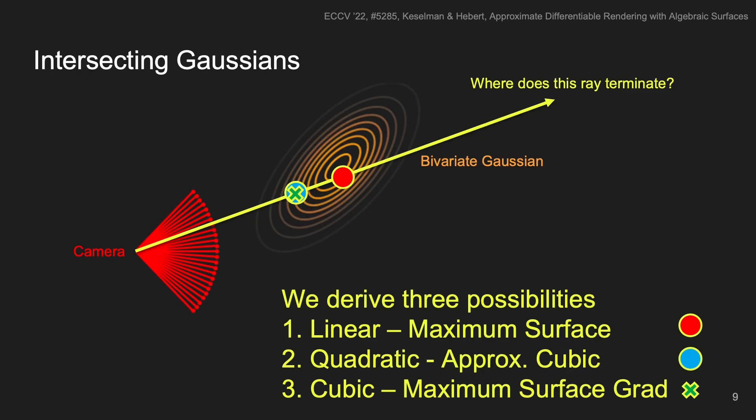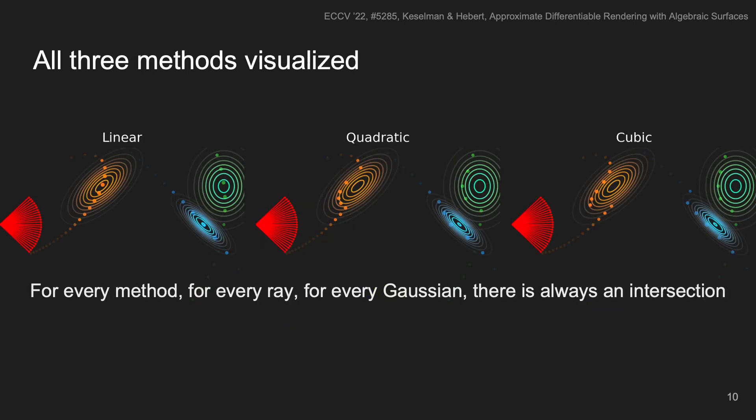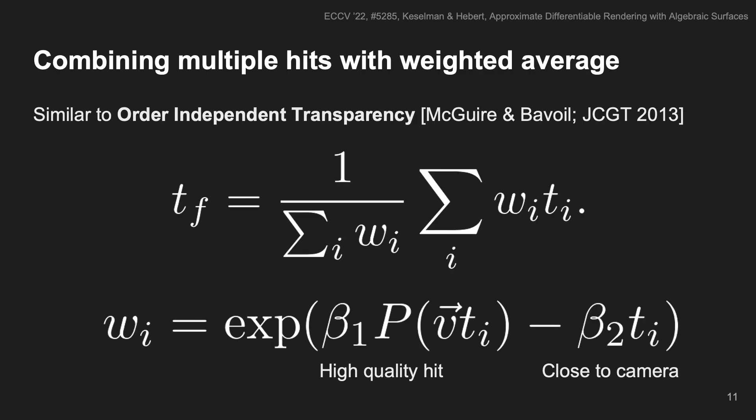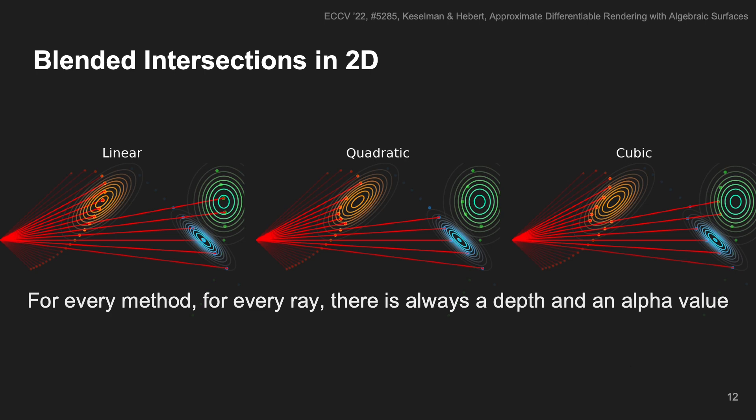We derive three different ways of intersecting Gaussians that maximize various properties about the surface, including one approximation. You can see what all three look like here. Of note, for every method, for every ray, for every Gaussian, there is always a well-defined intersection. We then combine multiple hits using a weighted average, similar to order-independent transparency. Our weights prioritize high-quality hits that are close to the camera, with a hyperparameter to control the impact of each. Here are examples of what the blended rays look like in the prior 2D example.